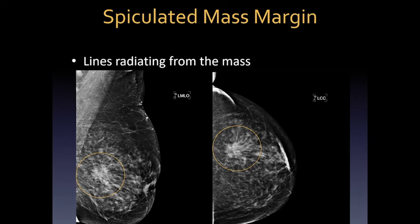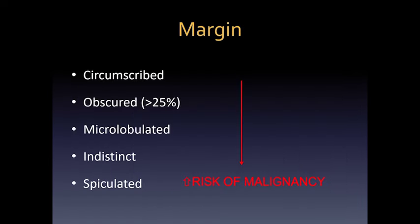The next margin is spiculation, where you see lines radiating from the mass. This is a very suspicious feature associated with malignancy more than 90% of the time, and this kind of lesion would give you a BI-RADS category 5. The margins from least suspicious — circumscribed — to obscured, microlobulated, indistinct, and spiculated increase in risk of malignancy.